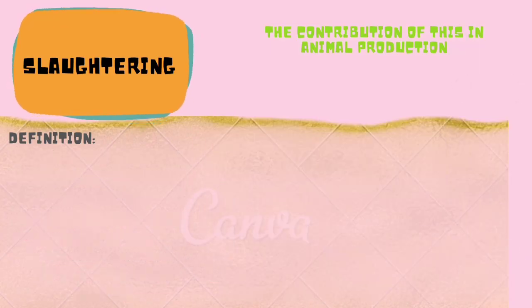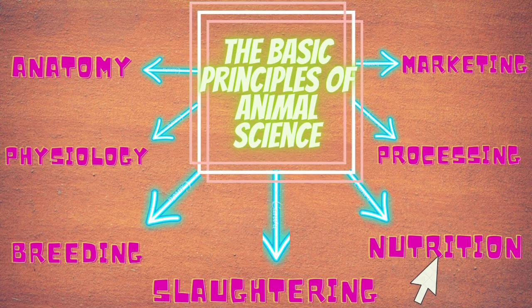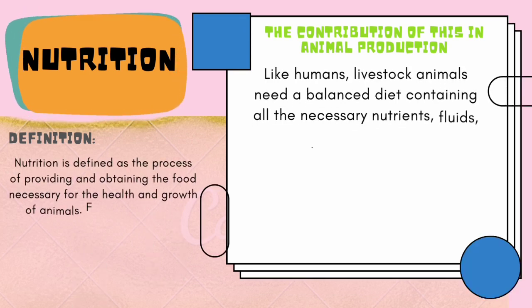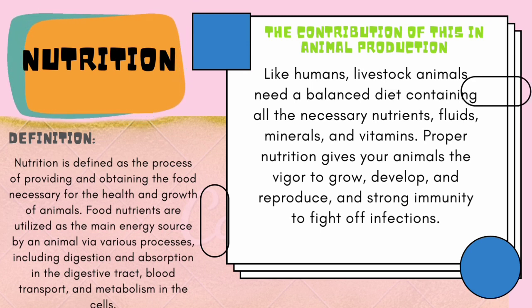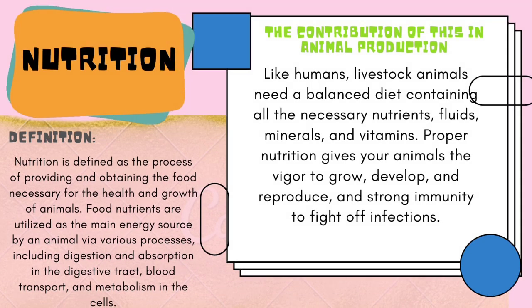The next principle is nutrition. Nutrition is defined as the process of providing and obtaining the food necessary for the health and growth of animals. Food nutrients are utilized as the main energy source by the animal via various processes including digestion and absorption in the digestive tract, blood transport, and metabolism in the cell. Like humans, livestock animals need a balanced diet containing all the necessary nutrients, fluids, minerals, and vitamins. Proper nutrition gives your animals the vigor to grow, develop, reproduce, and the immunity to fight off infections.